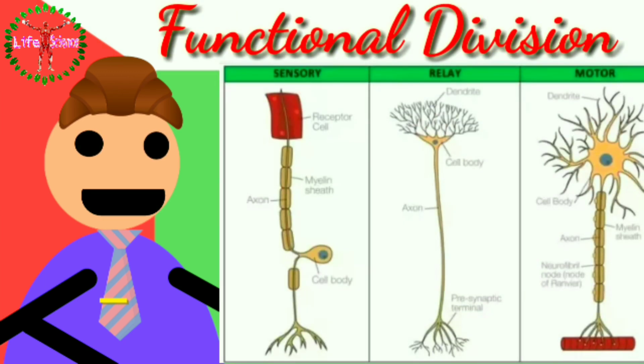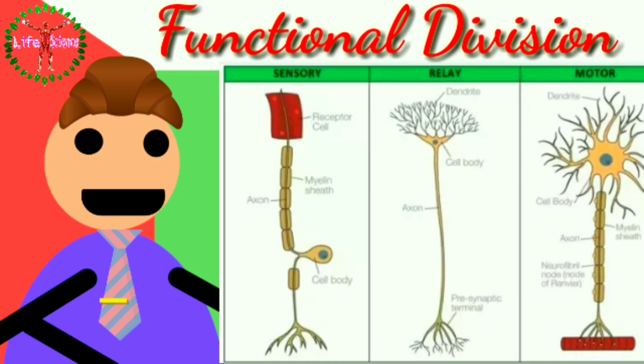Functional division. According to the function of the neurons, they are divided into three types: sensory, relay, and motor neuron.